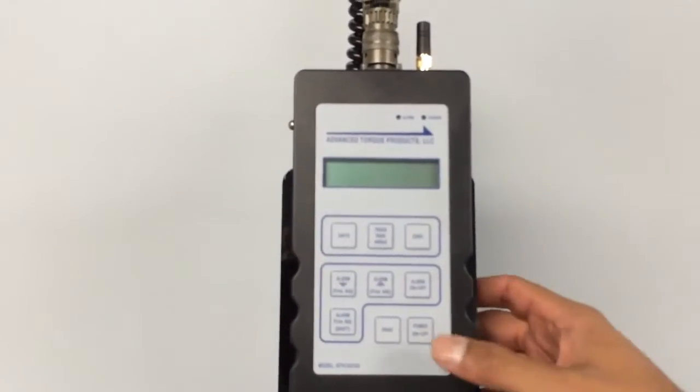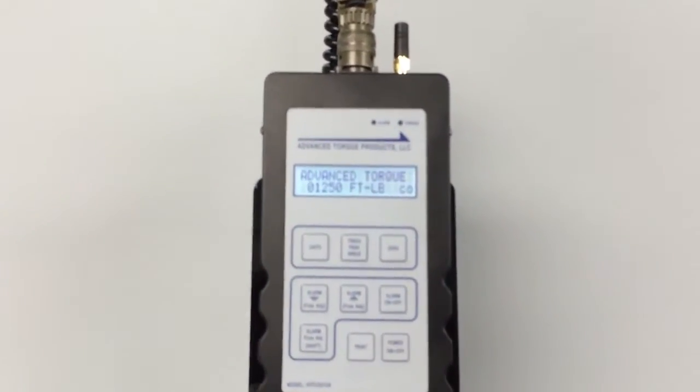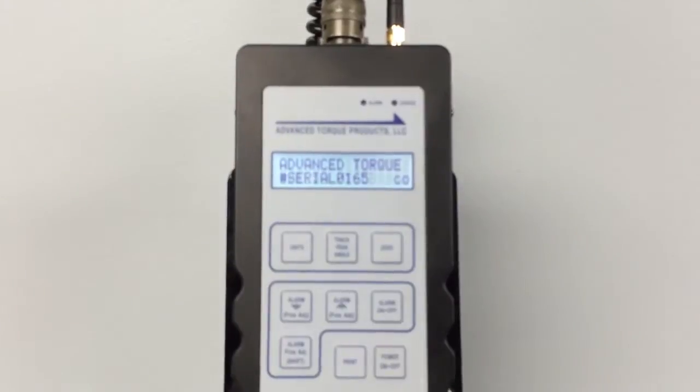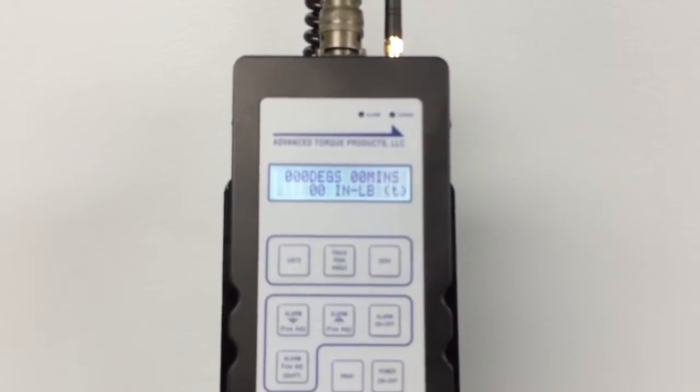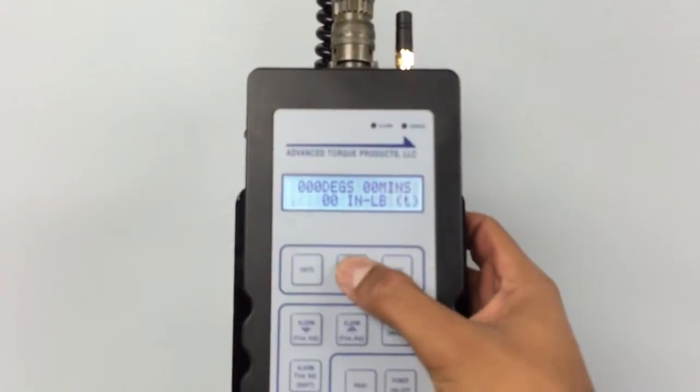Start by turning on the controller. After the startup message, toggle through the track, peak, and angle modes until peak is displayed.